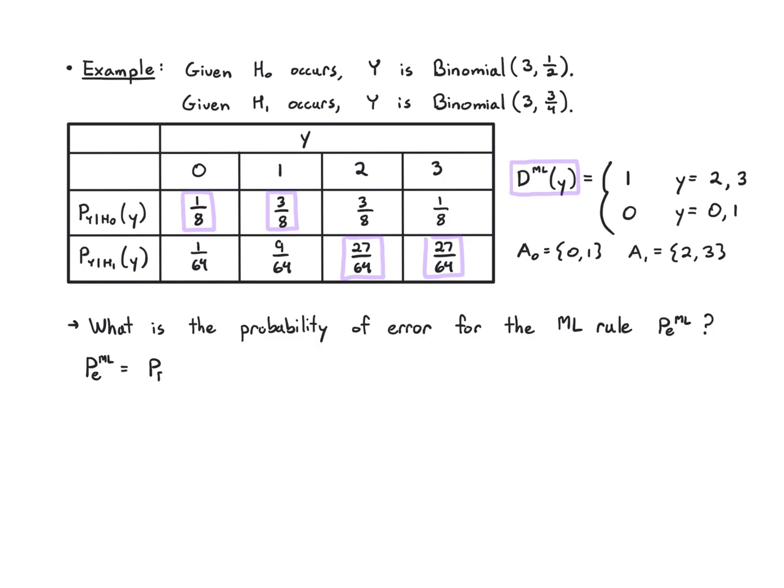The probability of error is just the probability of false alarm times the probability of H₀ plus the probability of misdetection times the probability of H₁, and this is from the previous video. But the problem is I don't have these values, and really I should have been given them at the outset. This problem was a little unusual. I just want to draw your attention to this fact that in order to calculate the probability of error for the ML rule, you need these values. I'm just going to give them to you.